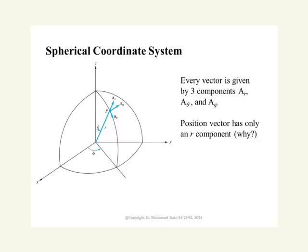In some applications, because of the problem geometry, we prefer to use spherical coordinate systems. A point in the spherical coordinate system is defined by three things. First, the distance r from the origin to the point — r is the position vector connecting the origin to point P. We call the unit vector in this direction ar.